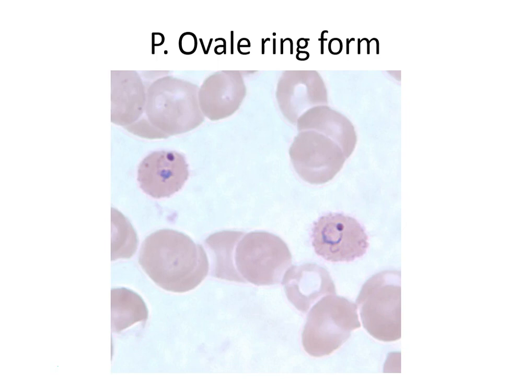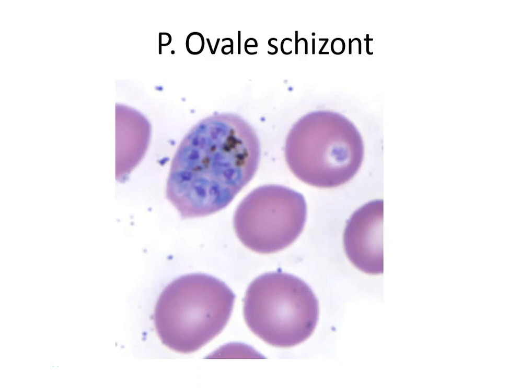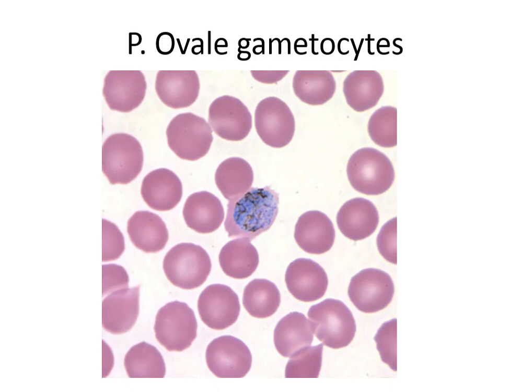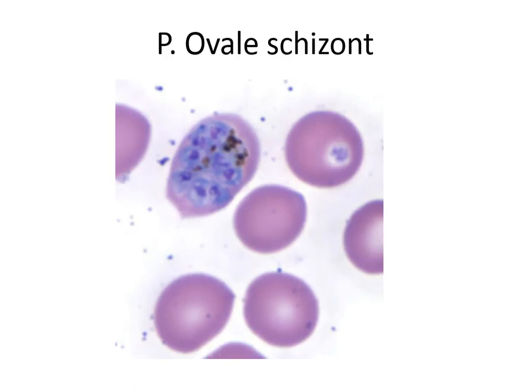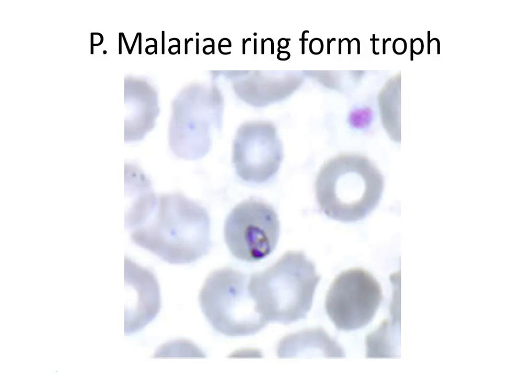P. ovale also has a 48-hour life cycle and has wrinkled, ragged, fringe-like edges — fimbriation. It can have double dots and the ring form takes up one-third the diameter of the red cell — often a thick ring form. It has 6 to 12 merozoites, average of 8. The schizont is usually smaller than vivax. It has Schüffner's dots. It's the least common species.